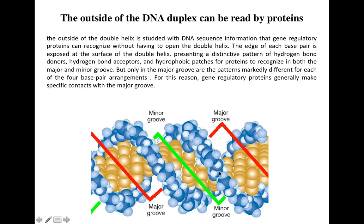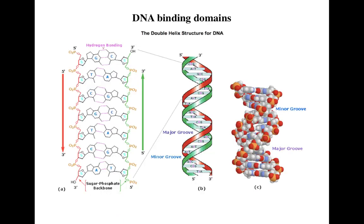The sugar-phosphate backbone on the periphery has a certain pattern because each base pair is exposed at the surface of the double helix, which presents a distinctive pattern of hydrogen donors, hydrogen bond acceptors, and sometimes hydrophobic patches. These three types of interactions are basically involved in the interaction of transcription factors with the DNA. Let's now look at the structure of the DNA.